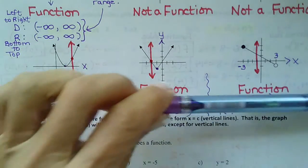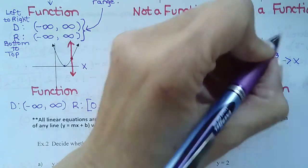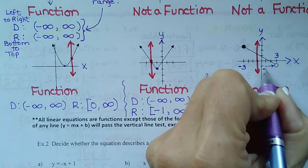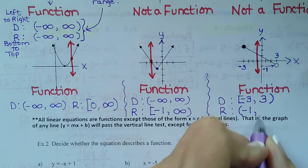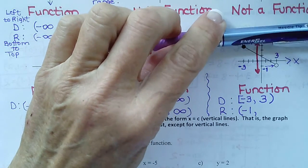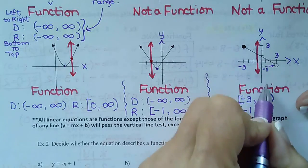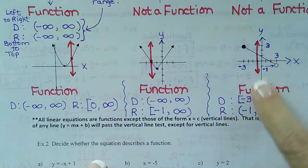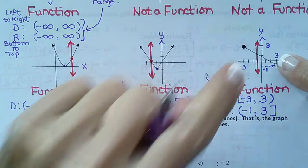Now we're doing bottom to top because we're doing range. Roll your pencil from the bottom — what's the lowest y value? Not x, we're only looking at the y-axis. The lowest y value is negative 1, and it is an open circle, so at negative 1 we put a parenthesis. Then, because range is bottom to top, we go all the way to the top — the highest y value is 3, and 3 has a solid circle, so we use a bracket. So: lowest y is negative 1, highest y is 3, lowest x is negative 3, highest x is positive 3 with a parenthesis.